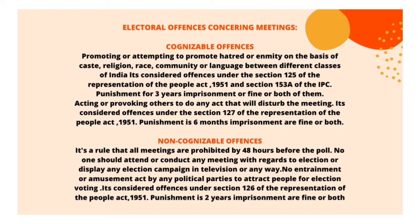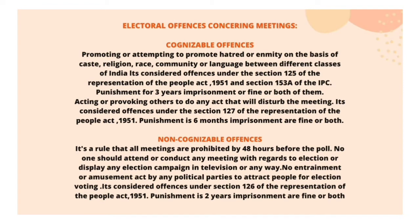Regarding electoral offenses concerning meetings — cognizable offense: promoting or attempting to promote hatred or enmity on the basis of caste, religion, race, community, or language between different classes of India is an offense under Section 125 of the Representation of the People Act 1951 and Section 153A of the IPC. The punishment is three years' imprisonment, or a fine, or both.